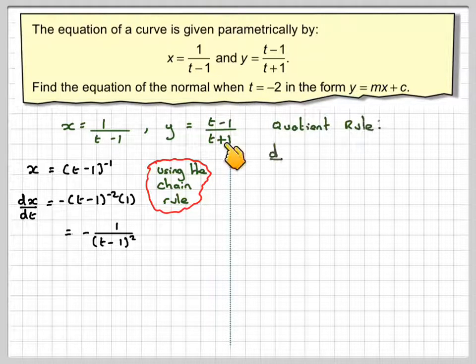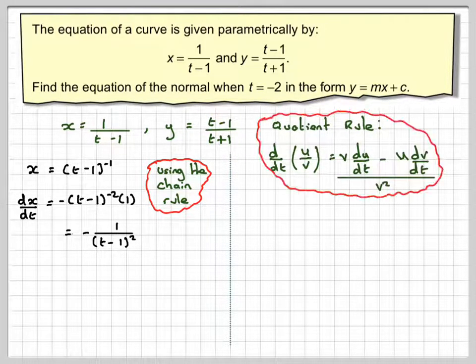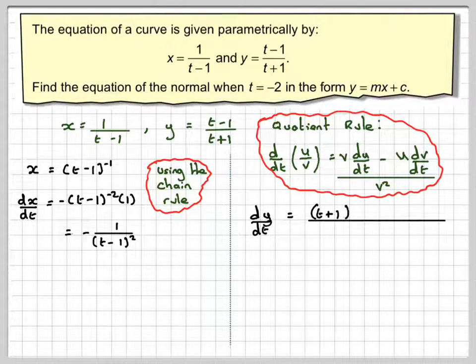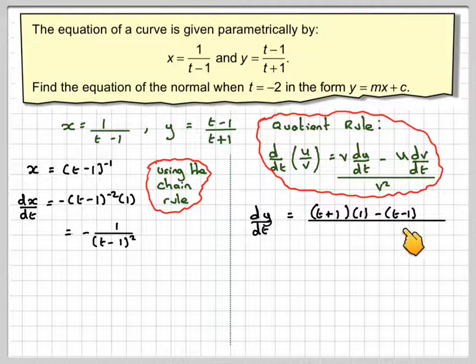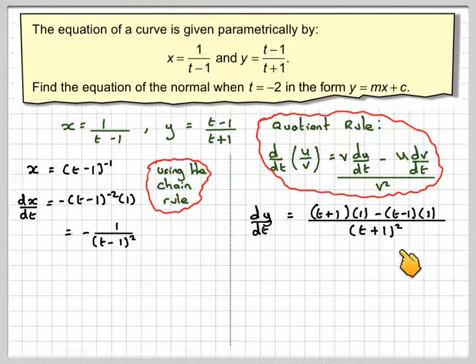For this one we'll have to use the quotient rule. So using the quotient rule with u is t minus 1 and v is t plus 1, that's going to be v, which is t plus 1, times du by dx, the differential of u is 1, minus t minus 1 times 1, divided by v squared, which is t plus 1 squared.